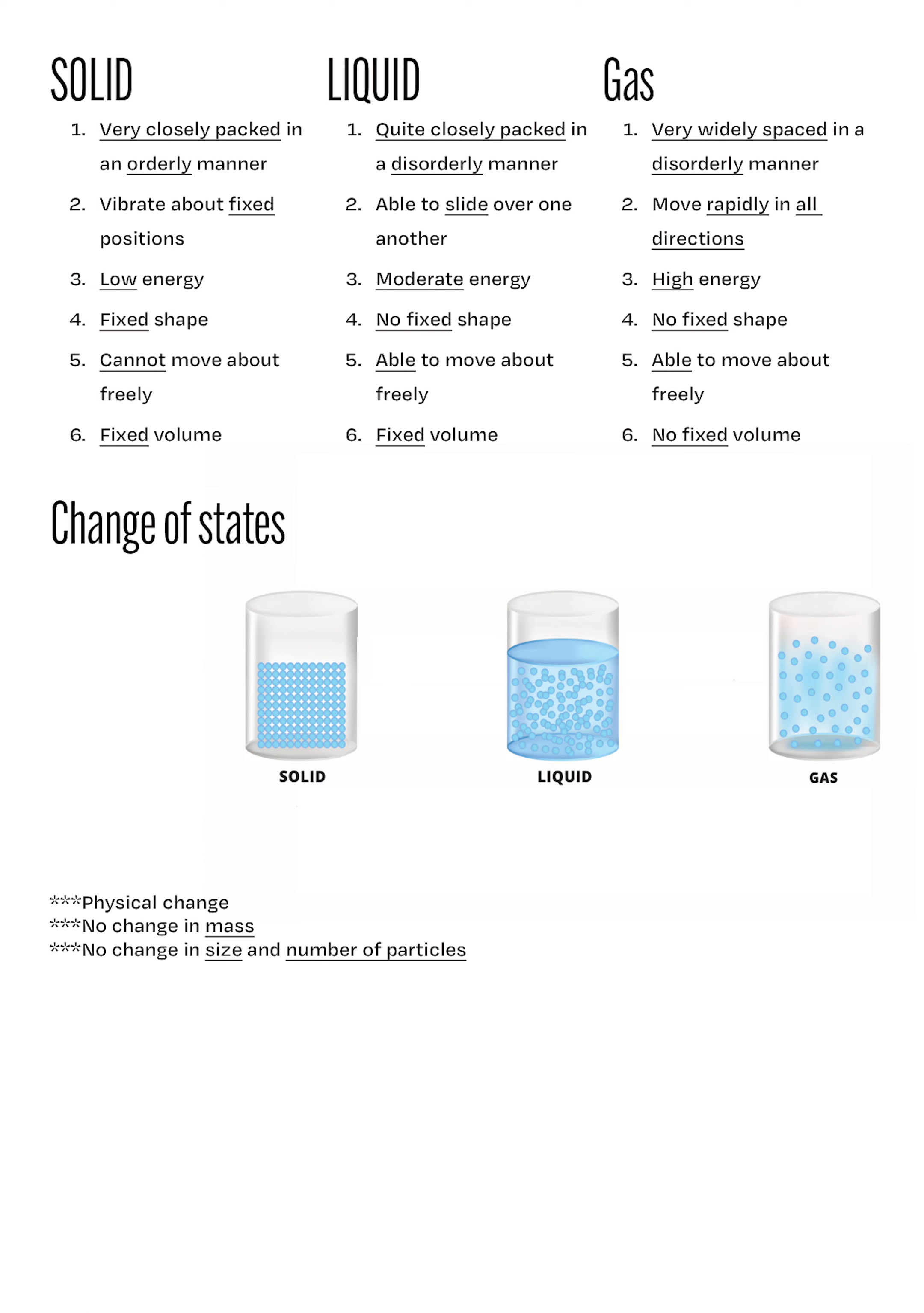Now, let's zoom in on the various changes of state. You can pause the audio and refer to the diagram in the notes. Solids gain heat in order to melt and form liquids. Liquids gain heat in order to boil or evaporate and form gases. Gases lose heat and undergo condensation to form liquids. And finally, liquids lose heat and freeze to form solids.